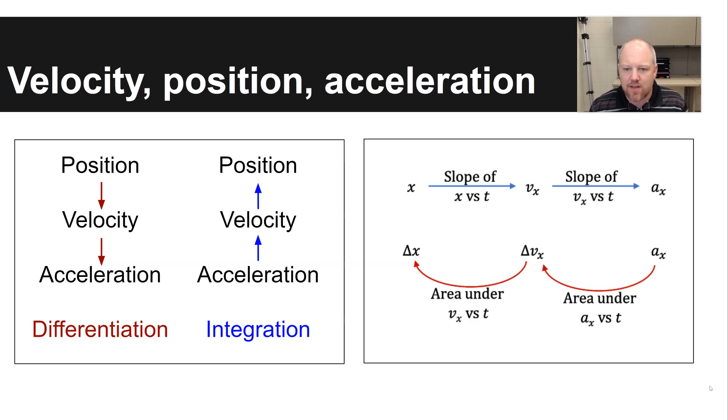And so just these concepts, how they relate to graphs. If you have a position versus time graph, you can find the slope of your position versus time graph to determine your velocity versus time. You can find the slope of your velocity versus time graph to figure out your acceleration at a given point.